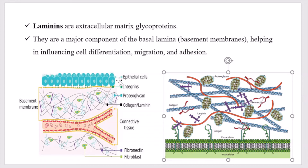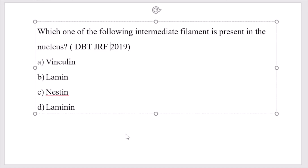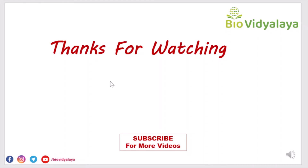I think this video will be helpful for you. If it is helpful, please share this video with your friends and don't forget to subscribe to this channel. Here is one question for you from DBT JRF 2019: Which one of the following intermediate filaments is present in the nucleus? Option A: Vinculin. Option B: Laminin. Option C: Nestin. Option D: Lamin. Please try to answer this question and comment your answer in the comment section below. Keep learning. Thank you.